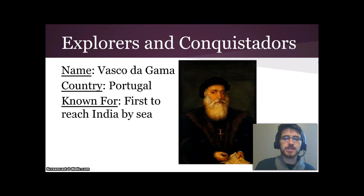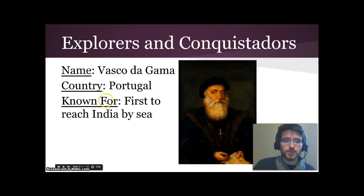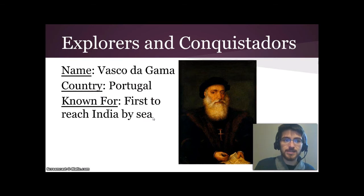Now we move to this long list of explorers and conquistadors — important people you should know. The first is Vasco da Gama, who sailed for Portugal. He was the first person to reach India by sea, sailing all the way down around Africa and arriving at Calcutta, a major trade port in India.